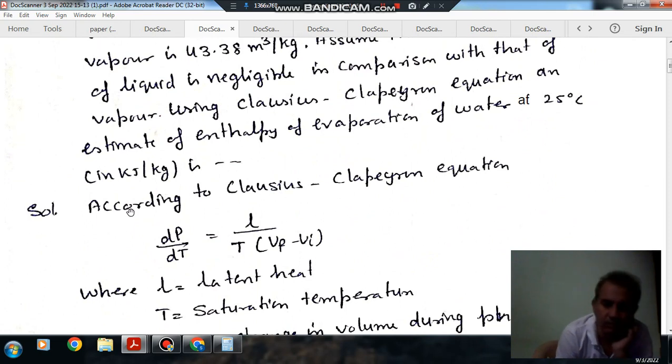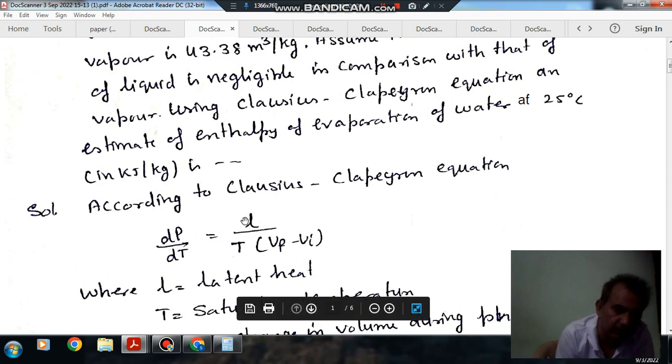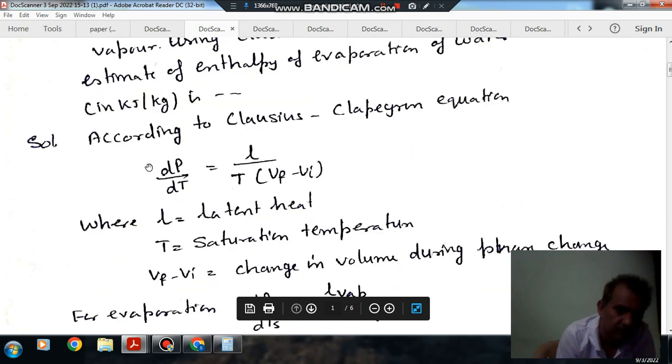So according to Clausius-Clapeyron equation, we have dP/dT equals L by T bracket Vg minus Vf. Here L is latent heat, Vg is the vapor volume and Vf is the liquid volume, T is the saturation temperature, and dP/dT is the slope of pressure-temperature curve.